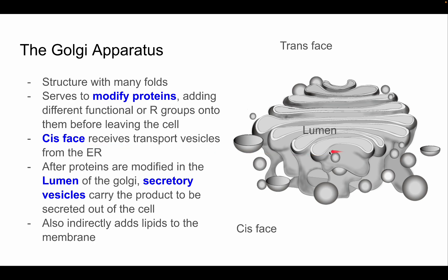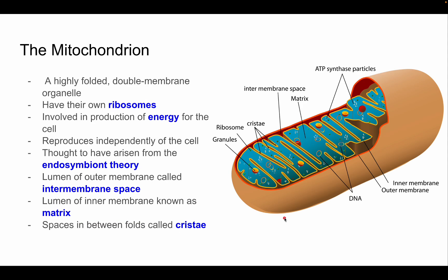The cis face of the Golgi receives transport vesicles from the ER. The ER secretes modified proteins — or any proteins produced by the rough ER — to the Golgi apparatus for extracellular secretion. The Golgi modifies them through its lumen, and when done, the product migrates outward, producing secretory vesicles that merge with the cell membrane to secrete the protein product, while also indirectly adding to the lipid bilayer.